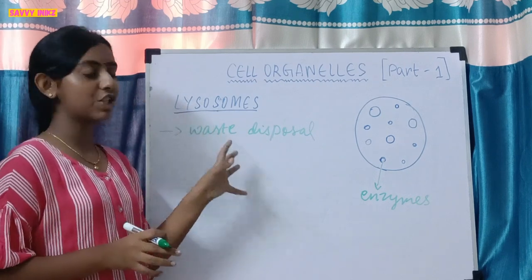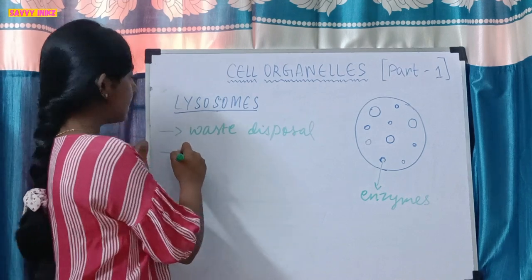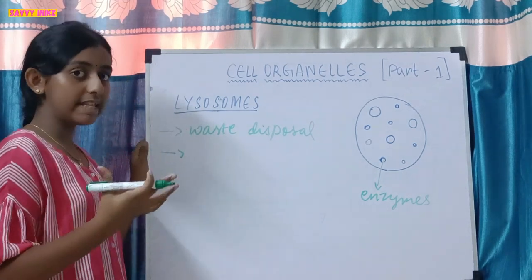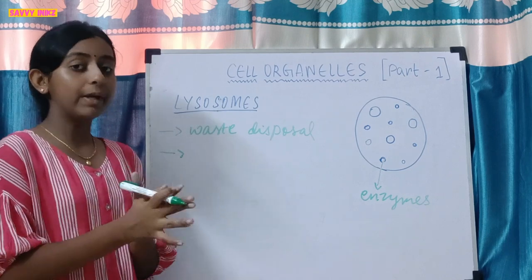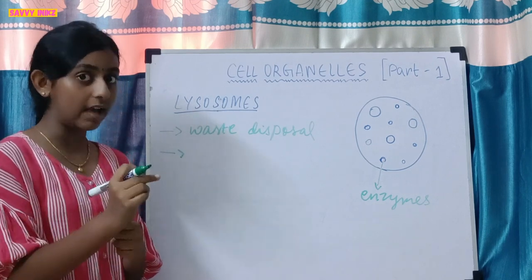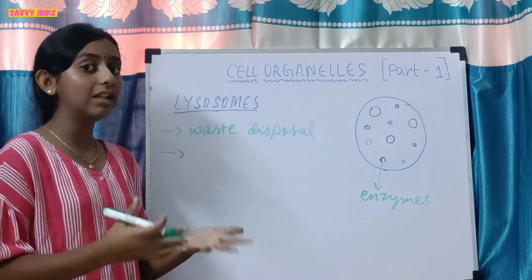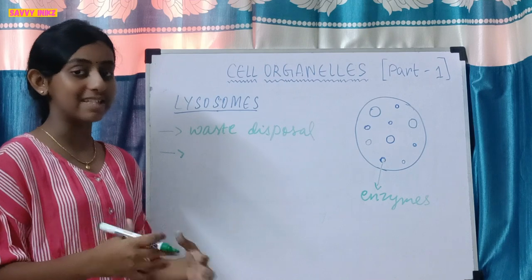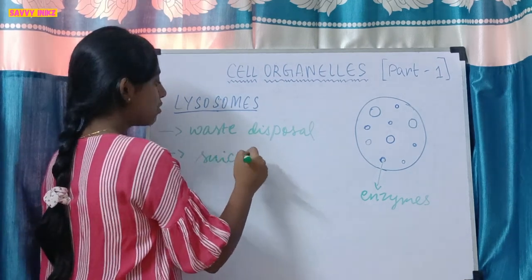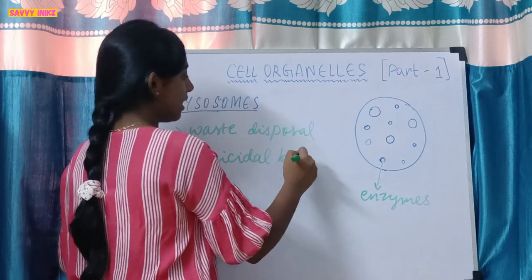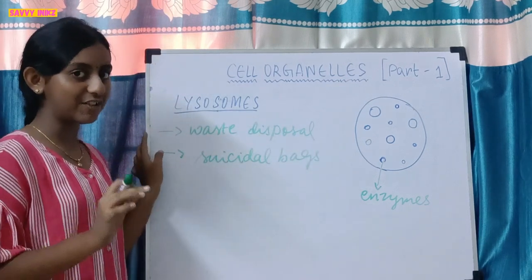If any cell is damaged, it has to be removed from the body, because if it stays it is very harmful. The lysosomes will release their enzymes and kill their own cellular components. That's why lysosomes are known as suicidal bags — because they kill their own cellular components, unlike any other cell organelles.